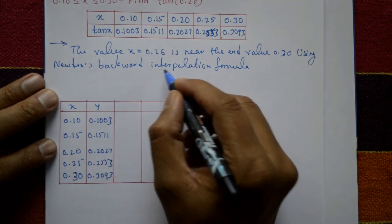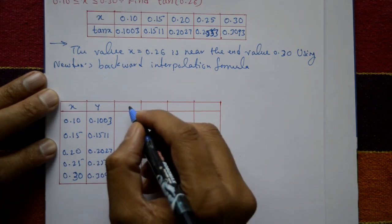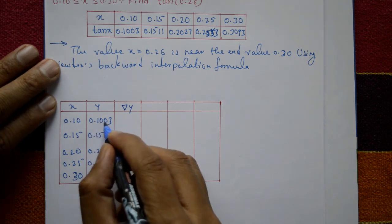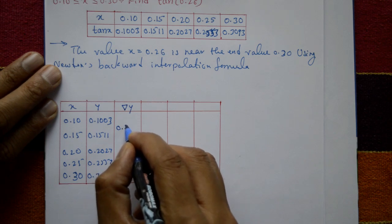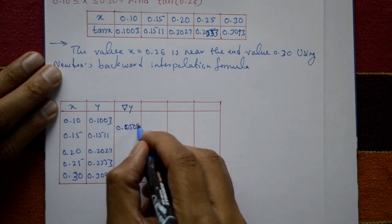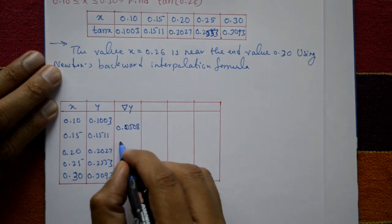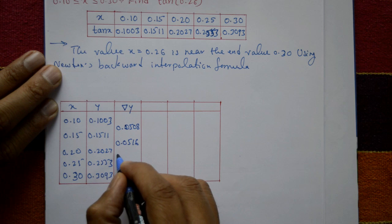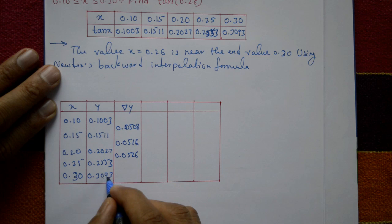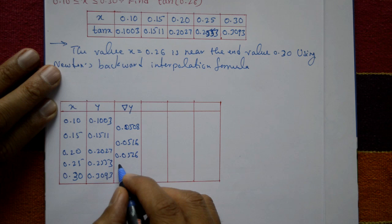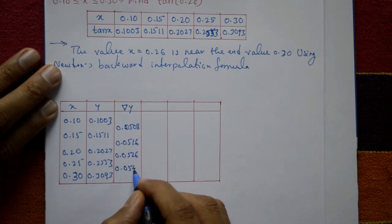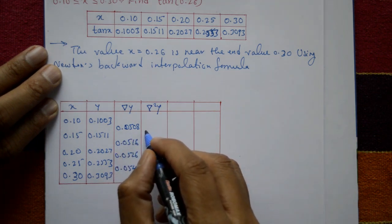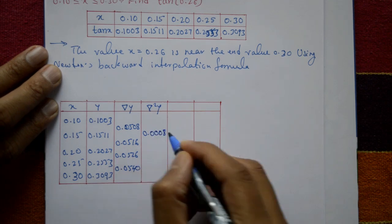Using Newton's backward interpolation formula, we construct the backward difference table. The first backward differences are computed as: 0.3093 − 0.2553 = 0.0540, and the other first differences are 0.0526, 0.0516, and 0.0508. The second backward differences: 0.0516 − 0.0508 = 0.0008, and 0.0014.